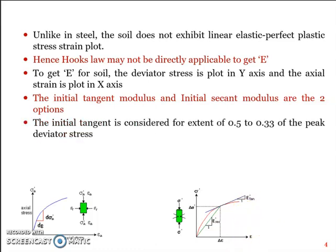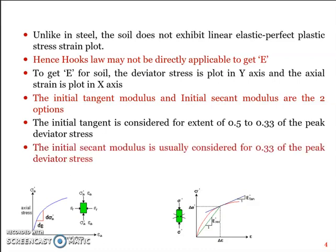Now the initial tangent is considered for usually an extent of 0.5 to 0.33 of the peak deviator stress, and the initial secant modulus is of the range of 0.33 of the peak deviator stress.